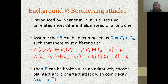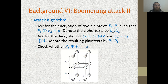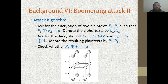Here is the boomerang attack algorithm. We take two plaintexts with difference alpha, p1 and p2, and denote the ciphertexts by c1 and c2. We shift both ciphertexts by delta, defining c3 = c1 XOR delta and c4 = c2 XOR delta. We decrypt them, call the resulting plaintexts p3 and p4, and check whether their difference is alpha. We claim that this holds with probability p²q².